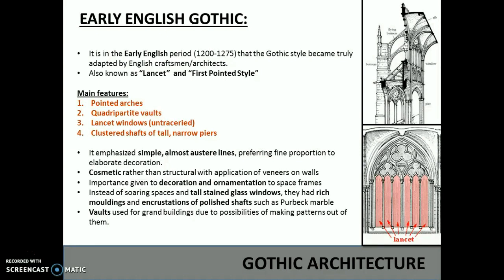Importance was given to decoration and ornamentation to space frames. Instead of soaring spaces and tall stained glass windows, they had rich mouldings and encrustations of polished shafts such as Purbeck marble. Walls were used for grand buildings due to the possibility of making patterns out of them. Cosmetic rather than structural, with application of veneers on walls.